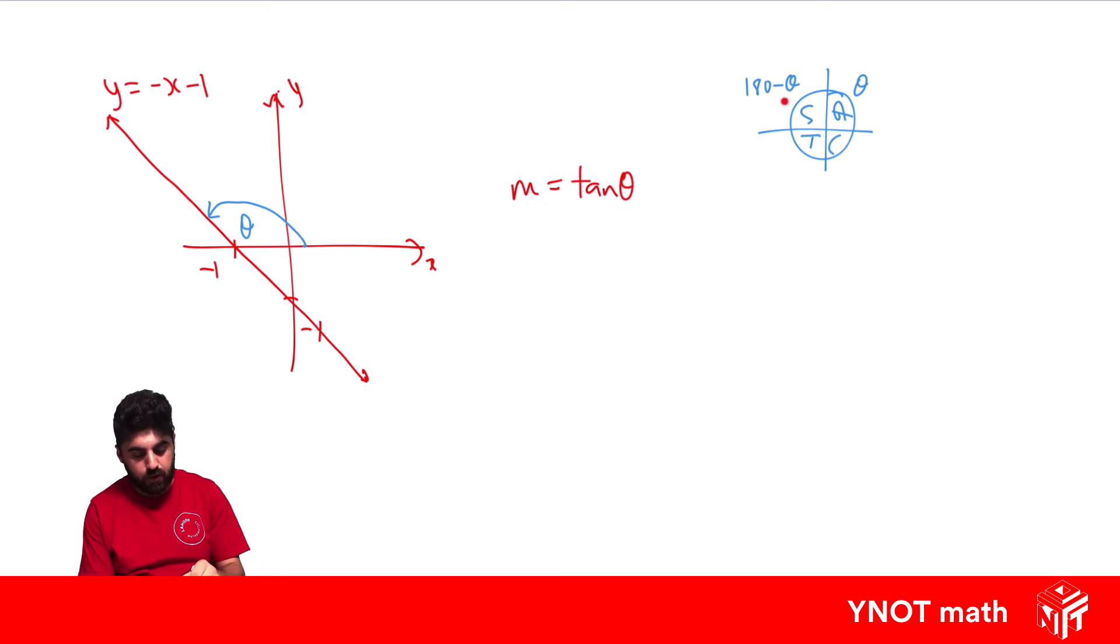...here we have an angle that's bigger than 90 but less than 180, so it's going to fall in the second quadrant. Only sine is positive in that second quadrant, and we have tan, so we know we're going to get a negative value for our gradient, which makes sense because the line is sloping this way.